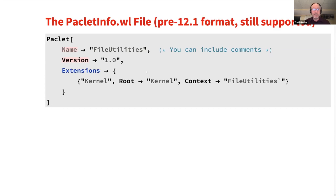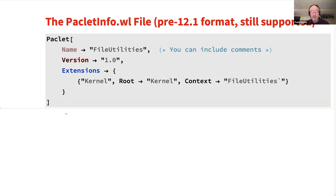This is the older format for PACLIT info files. Most PACLIT info files are actually in this format now — the head of the expression is PACLIT instead of packet object, there's no association, and the left-hand side of rules are symbols not strings. We're not really recommending people use this format, but it still works perfectly fine. We just transitioned to a new format. One issue: if you use the new format, your PACLITs will not be compatible with Mathematica 12.0 and earlier — only 12.1 and later can handle PACLITs in the new format.